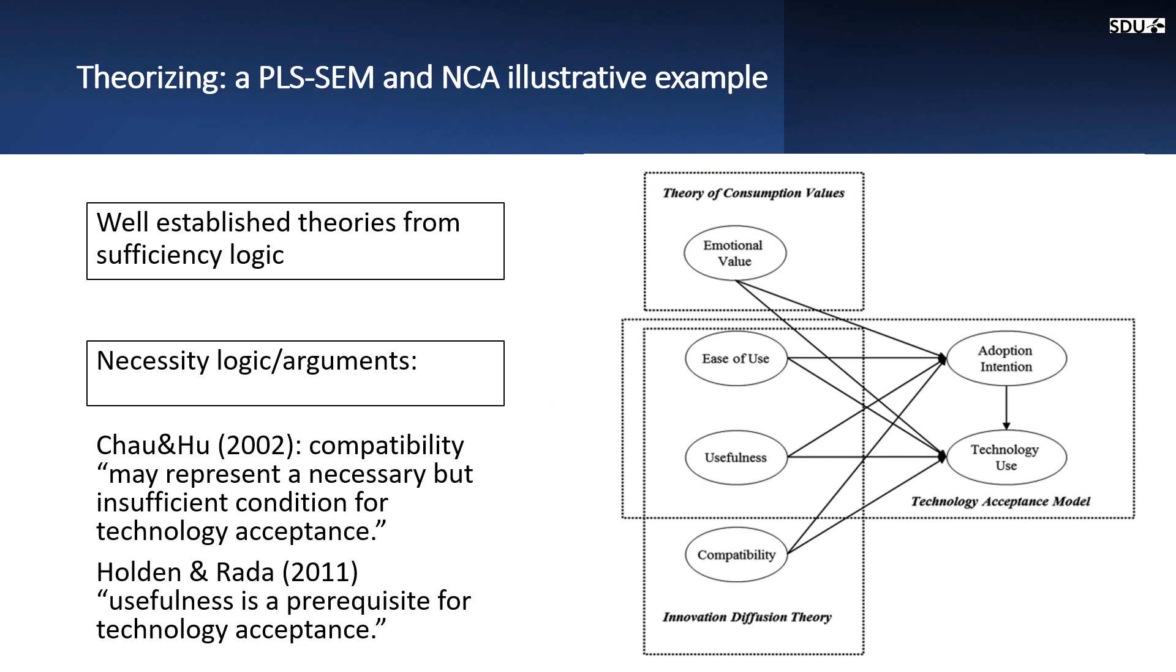Now let's think about it. What would you conclude if you found a non-significant relationship in a structural model for an antecedent construct? You may conclude that it is not relevant for the outcome. But for example, in this illustrative example, the authors found that the ease of use is not a significant should-have factor for the technology adoption.